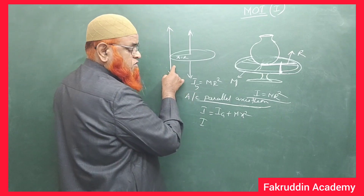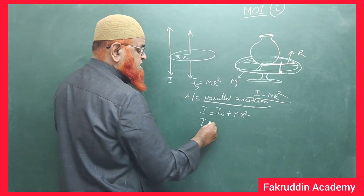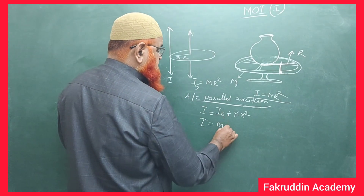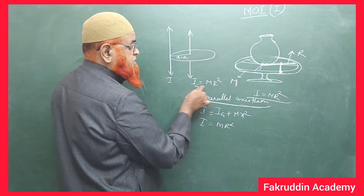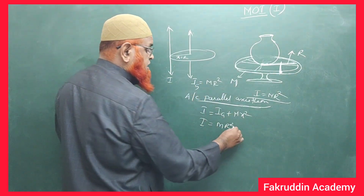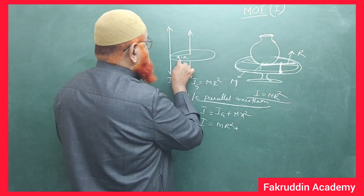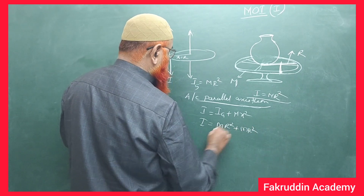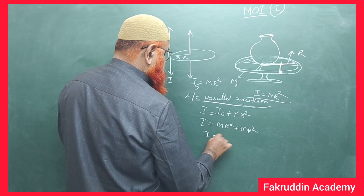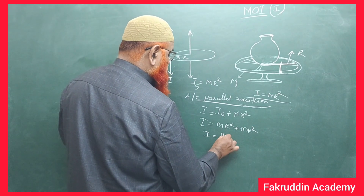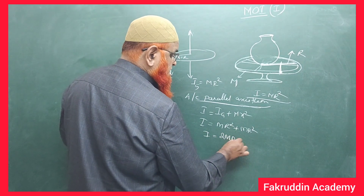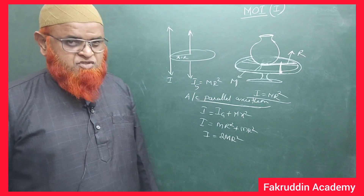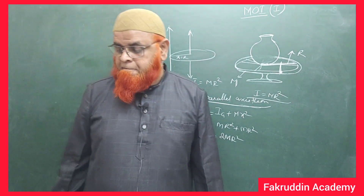According to the parallel axis theorem: I = Ig + mx². Here, Ig is the moment of inertia with respect to the center of gravity, and since x = r, we get mx² = mr². So I = mr² + mr² = 2mr².